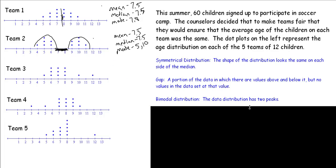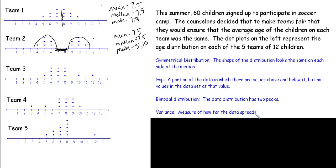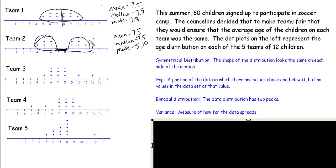Variance is simply a measure of how far the data spreads out. This data is more bunched together. This data is more spread out. Therefore this data has greater variance. Just understand that variance talks about how far out the data spreads away from the median.